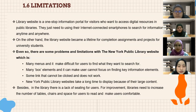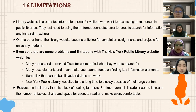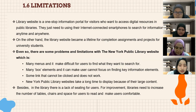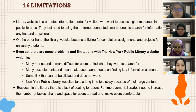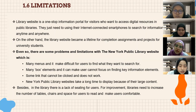Regarding limitations: the library website is a one-stop information portal for visitors who want to access digital resources. However, there are some problems with the New York Public Library website. First, there are many menu items, making it difficult for users to find what they want — for improvement, the library should focus on only four to six main menu items. Second, many box elements make users unable to focus on key information. Third, some links cannot be clicked and do not work — the non-functional clickable text should be removed as it also slows down loading time. Fourth, the New York Public Library website takes a long time to display due to large content.